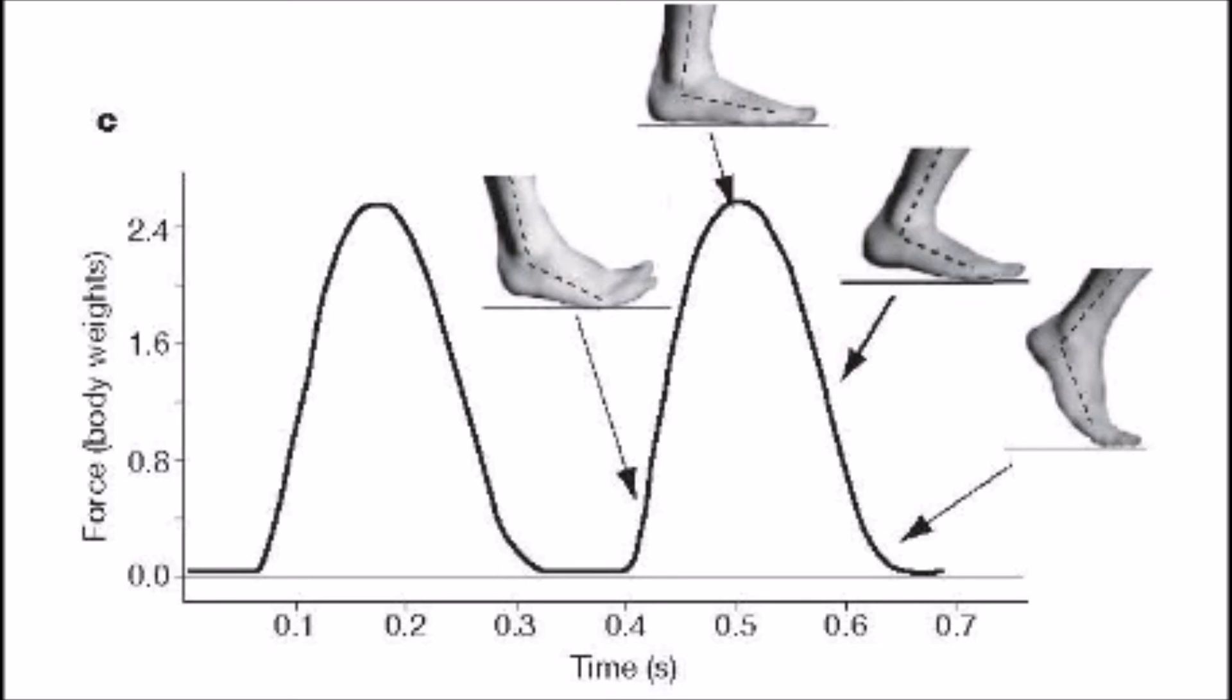So the absence of the impact transient alone is enough to provide the protection a runner needs to help avoid injury in forefoot running. This graphical representation of a forefoot strike is one of the main reasons why I stand behind forefoot running.